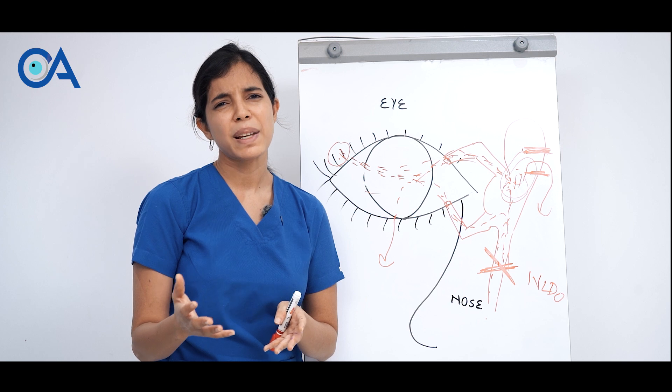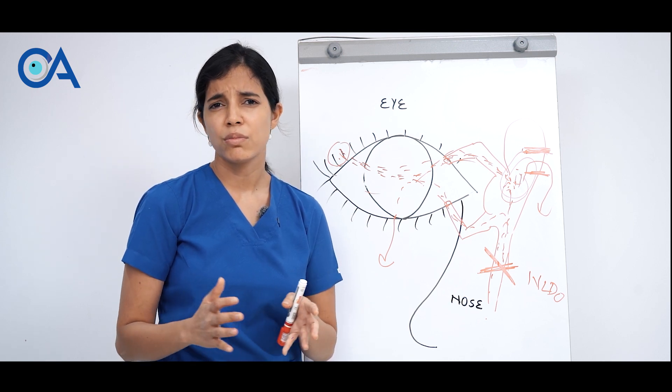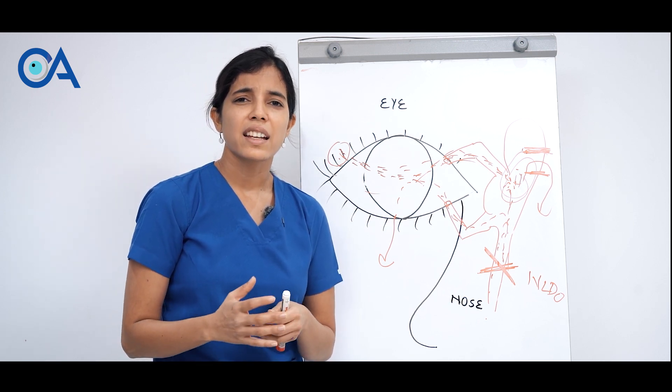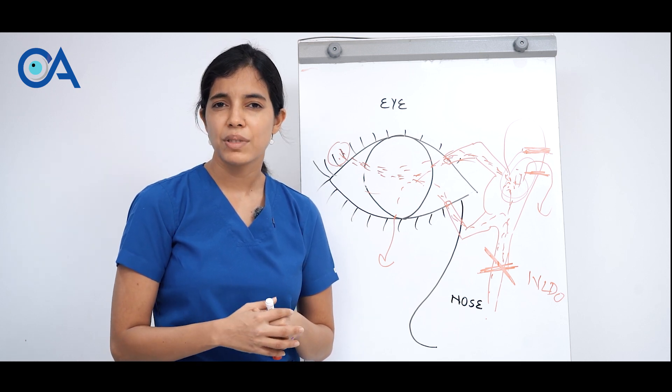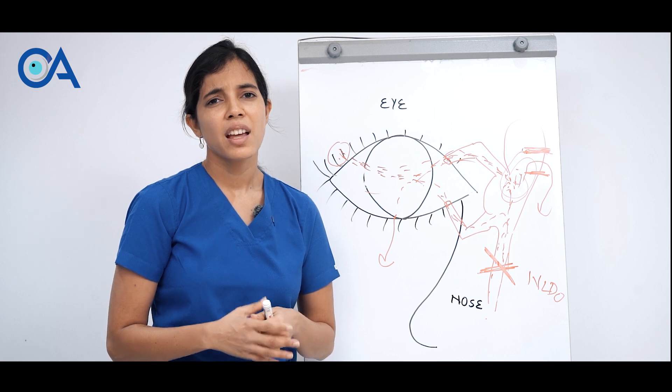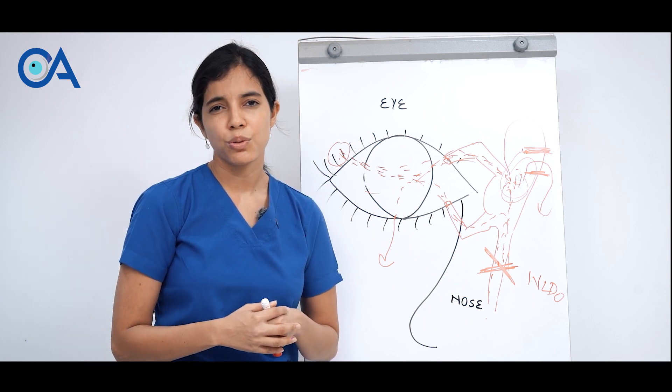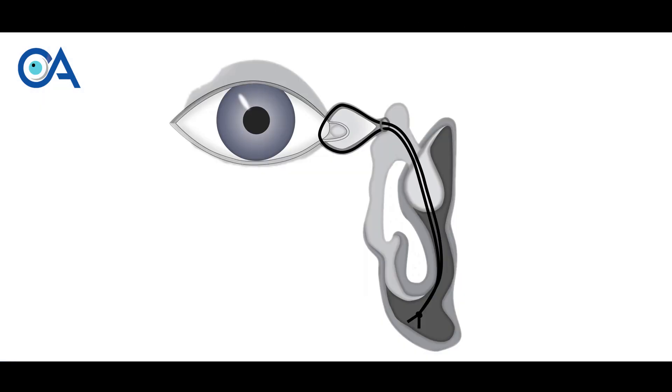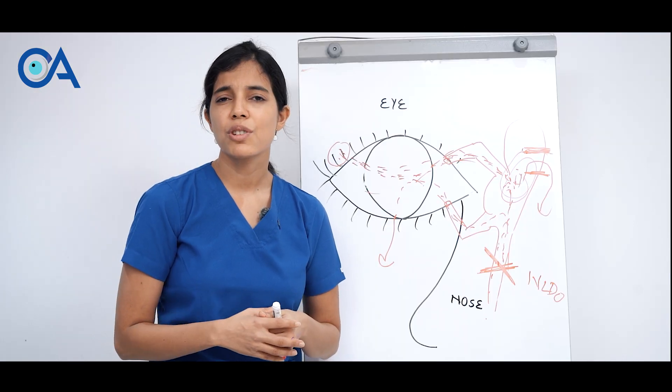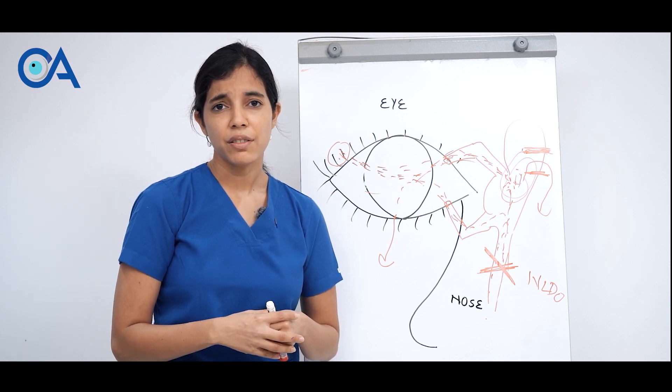This surgery is basically a 30 to 60 minute surgery and you don't need to get admitted, you can be discharged on the same day. You will just require two days of bed rest and after that you can continue with your routine activities. Sometimes in the surgery we may also put a tube to keep the new pathway open and we remove that tube generally after one month in the OPD itself.